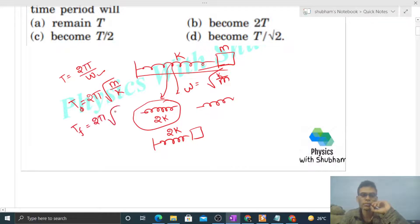Then T final will be 2π under root of m upon, instead of k, now it's 2k. So if I divide the two equations, 2π cancels, m cancels, k cancels. It means T upon T final will be under root 2, right?